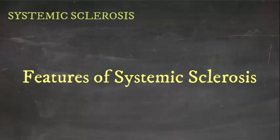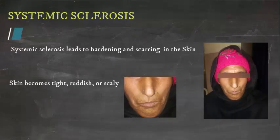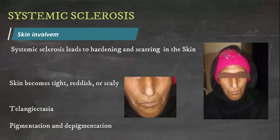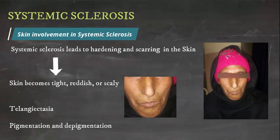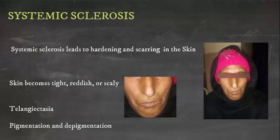In the skin, systemic sclerosis leads to hardening and scarring, causing the skin to become tight, reddish, or scaly. Moreover, telangiectasia, pigmentation, and depigmentation are seen on the skin of scleroderma patients.